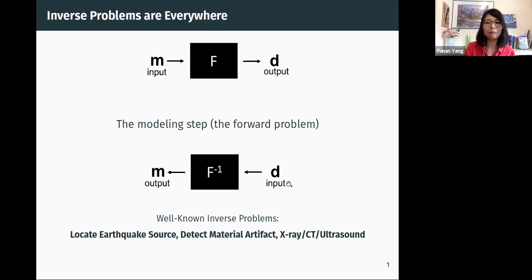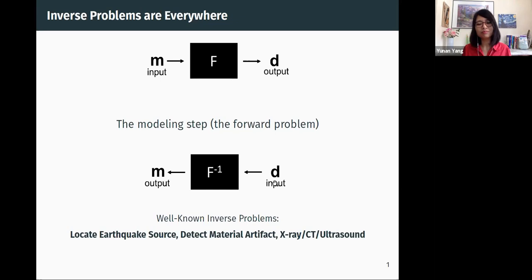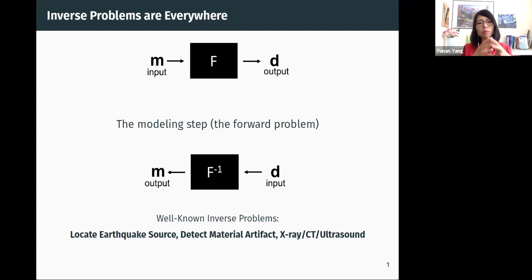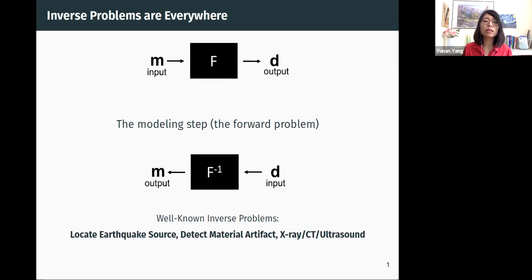Solving an inverse problem is like solving a puzzle — all the information you need is embedded in your data. The job is to peel out all the clues and find the correct parameter. Common inverse problems include finding the earthquake source, investigating whether a material has artifacts without breaking it, or medical imaging techniques such as X-rays, CT, CAT scan, or ultrasound.